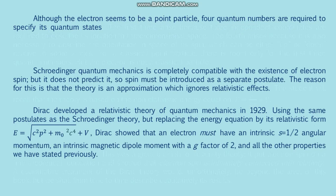The electron appears to be a point particle. Four quantum numbers are required to specify its quantum states: the first three arise because three independent coordinates are required to describe its location in three-dimensional space; the fourth is also necessary to describe the orientation of the spin relative to some z-axis. For a classical point particle there is room only for the first three quantum numbers, but the electron is not classical. Quantum mechanics is completely compatible with electron spin but does not predict it, so spin must be introduced as a separate postulate. The reason is that the theory is an approximation that ignores relativistic effects.